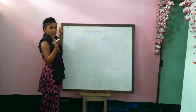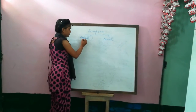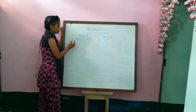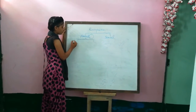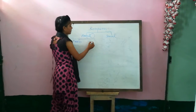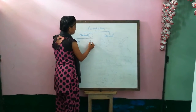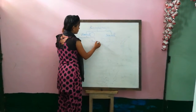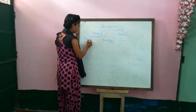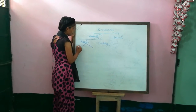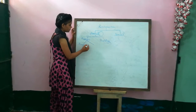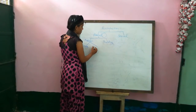Asexual Reproduction is also of two types: first, Fission, and second, Budding. Fission is also of two types: first, Binary Fission, and second, Multiple Fission.